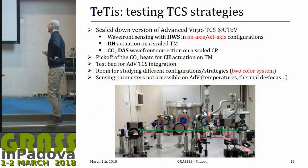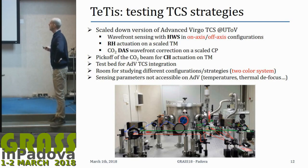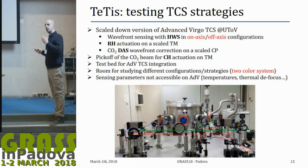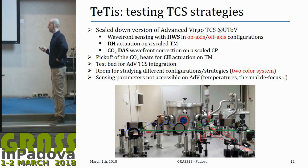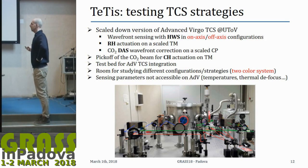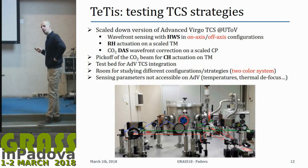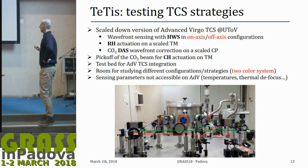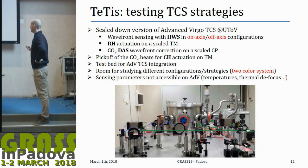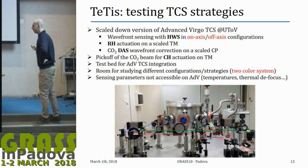At the University of Tor Vergata, we have a facility called TETIS — a scaled-down version of Advanced Virgo to study and test TCS strategies. We have all the actuators present in Virgo: ring heaters, DAS, and central heating, as well as Hartmann cameras in both on-axis and off-axis configurations. There is also room for studying different configurations, such as the two-color system, and access to sensing parameters not available in Advanced Virgo, like temperatures everywhere and thermal defocus.